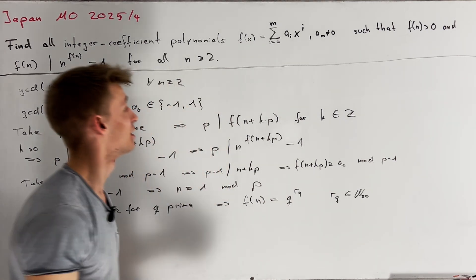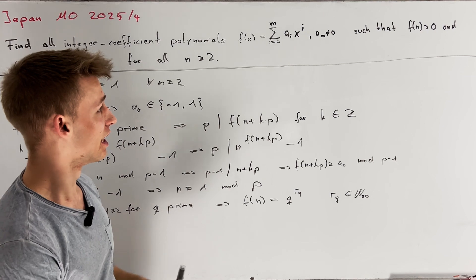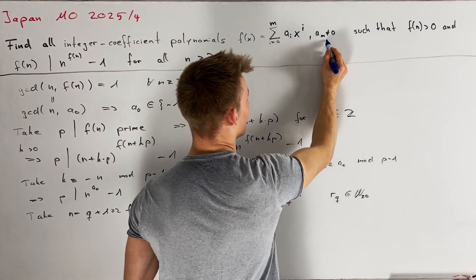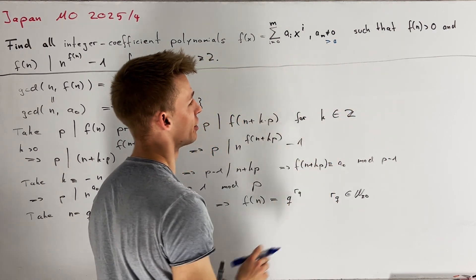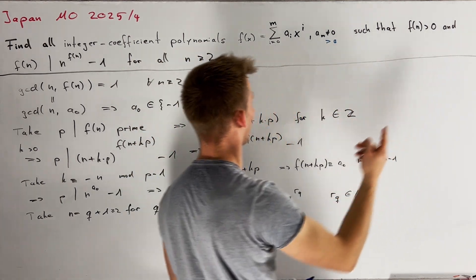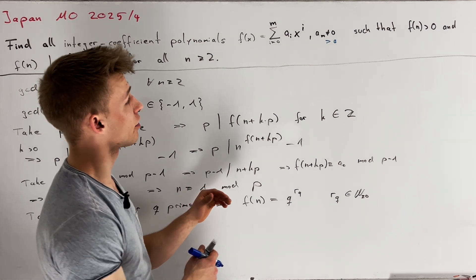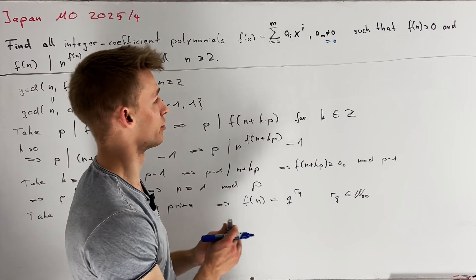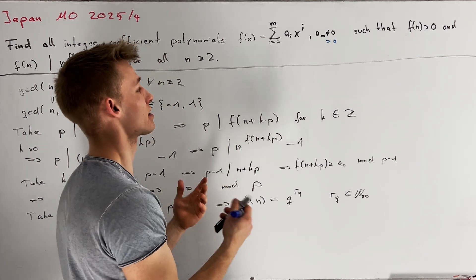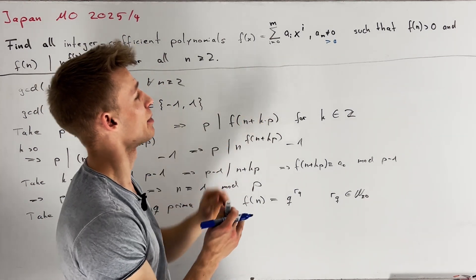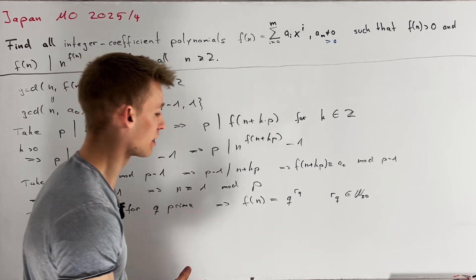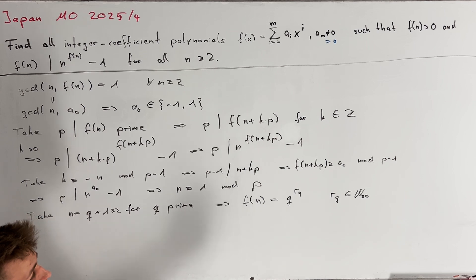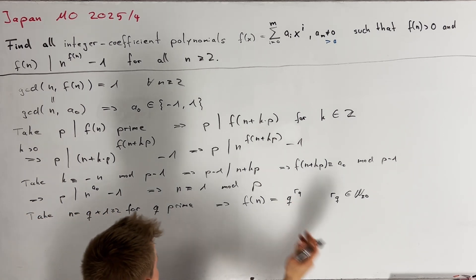At this point, we use the fact that f(x) is a polynomial. First, note that aₘ must be greater than 0, since f(n) is greater than 0 for all n greater than or equal to 2. As an immediate consequence, f grows faster than (x-1)^(m-1) but slower than (x-1)^(m+1). Therefore, if prime q is chosen large enough, we must have that r_q equals m.